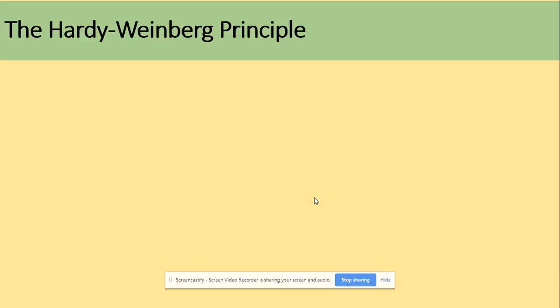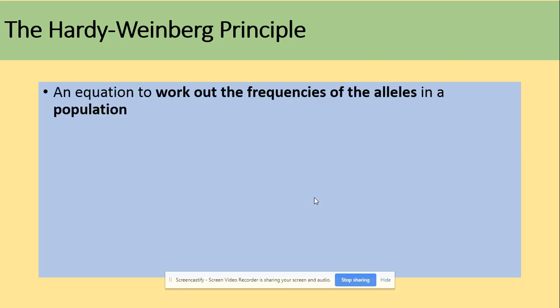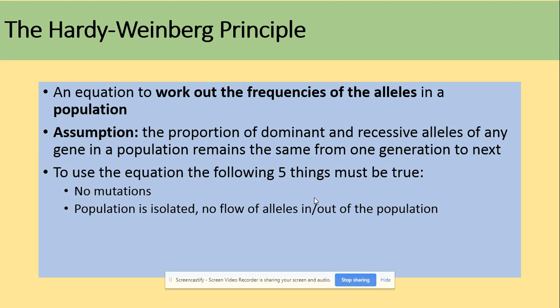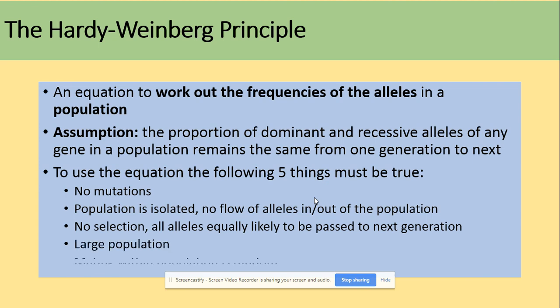So what is the Hardy-Weinberg Principle? It's an equation to work out the frequencies of the alleles in a population. The assumption is that the proportion of dominant and recessive alleles of any gene in a population remains the same from one generation to the next. And there are five things that must take place for this equation to be true. There are no mutations. Population is isolated so there is no flow of alleles in or out of the population. There is no selection so all alleles are equally likely to be passed to the next generation. We're dealing with a large population size and the mating within the population is random.